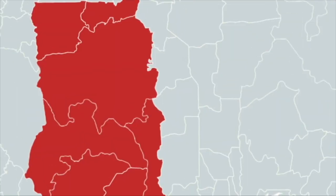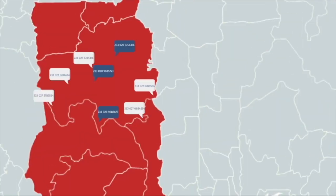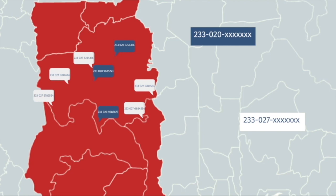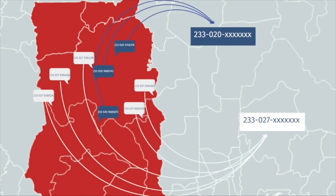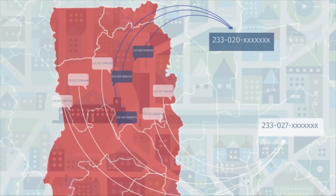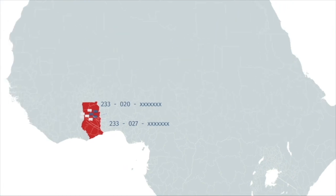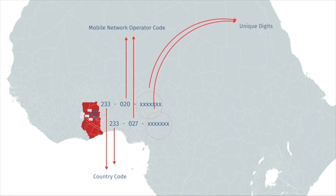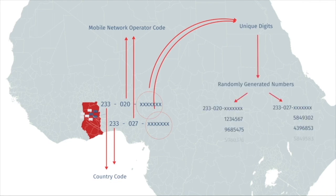So how does RDD work? A machine learning algorithm identifies a small set of verified existing numbers in the region of operation. From these phone numbers, country codes, area codes, mobile phone operating codes, and unique digits are identified. In this example, the last seven digits of the number are unique. The algorithm will then randomly generate those last seven digits to create mobile phone numbers that are likely to exist in the specified area of interest.